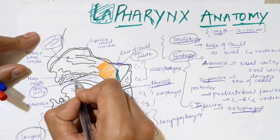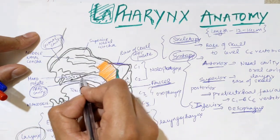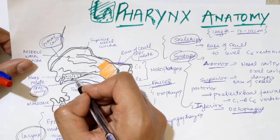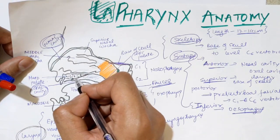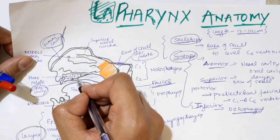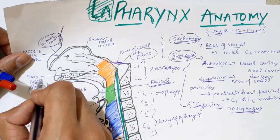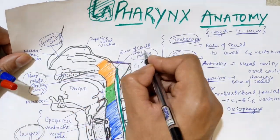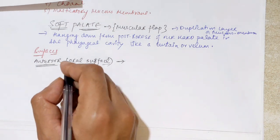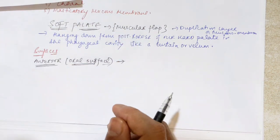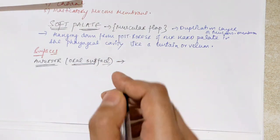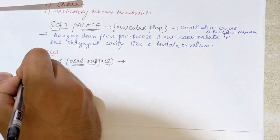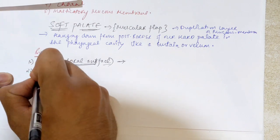So the anterior border of the soft palate is attached to the posterior border of the hard palate. That is why this surface is called the oral surface.